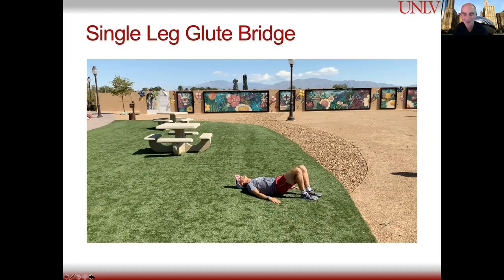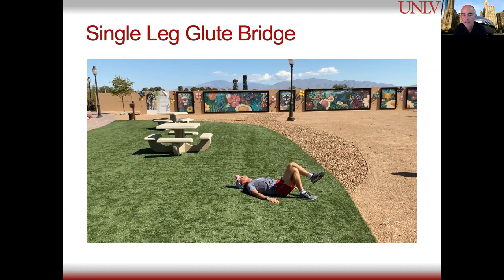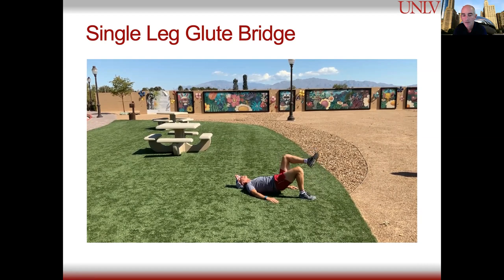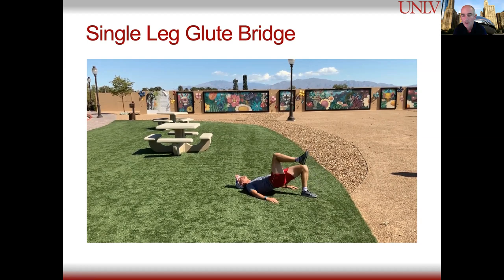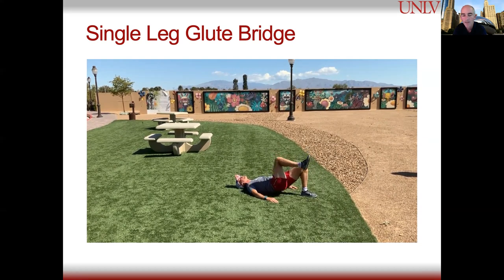The next one is a single leg glute bridge — you can do this pretty much anywhere. You're just going up and down on one leg. This one really does work the glutes and gets good activation. None of these exercises are difficult when you're fresh, and sometimes when you're running it feels good to just lie down for a second — at least you're still doing something productive.